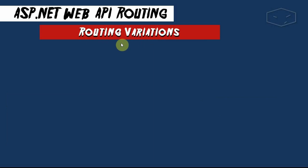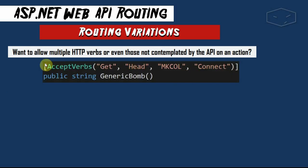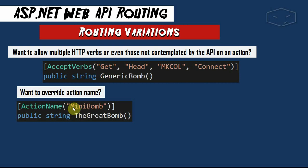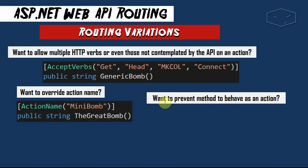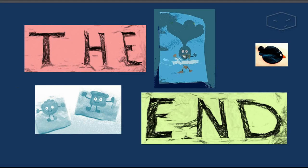To finalize, let's talk about routing variations. The first tip is to allow multiple HTTP verbs, or even custom ones the API doesn't know about, using the AcceptVerbs attribute. The second is to override the action name using the ActionName attribute — for example, MiniBomb maps to the real method named TheGreatBomb. Finally, if you want to prevent a method from behaving like an action, use the NonAction attribute. This is the end — thank you for watching.